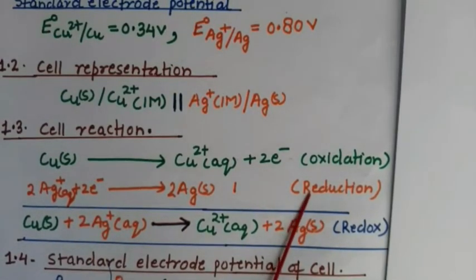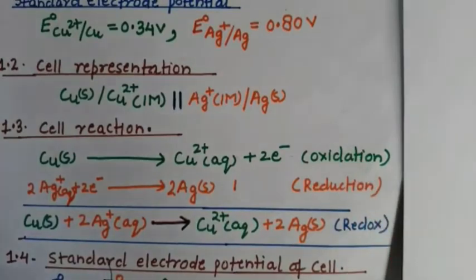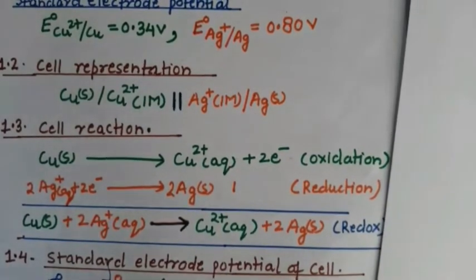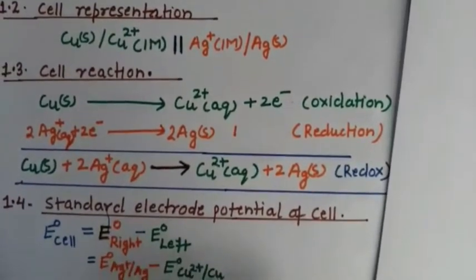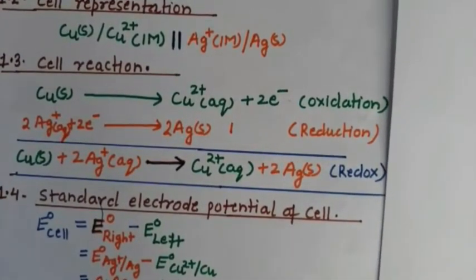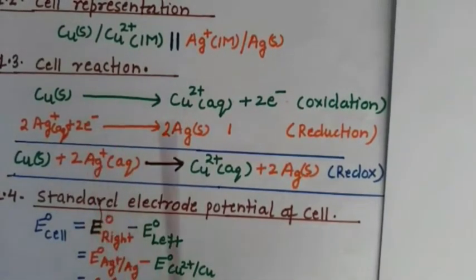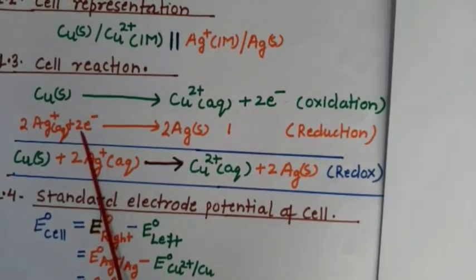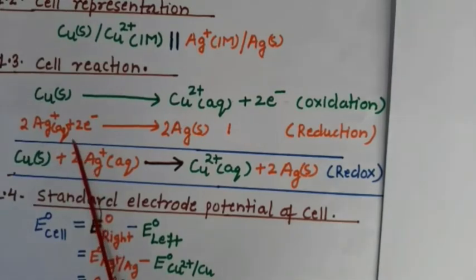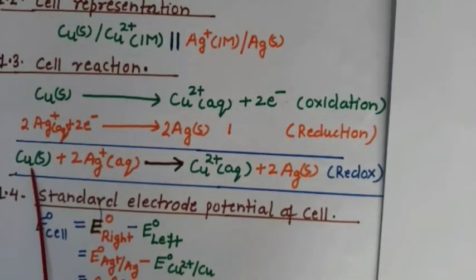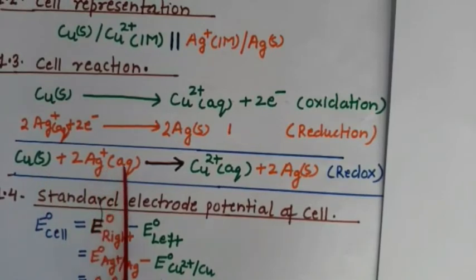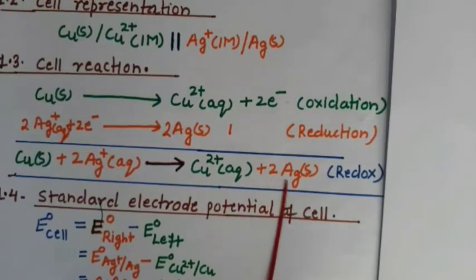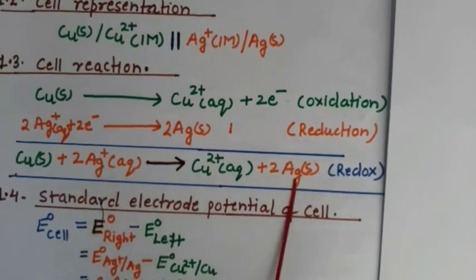The reduction reaction involves gain of electrons and the oxidation reaction involves loss of electrons. Since the two electrons lost in oxidation are canceled by the two electrons gained in reduction, the overall redox reaction is: Cu(s) + 2Ag⁺(aq) → Cu²⁺(aq) + 2Ag(s). This is the redox reaction on which this cell is based.